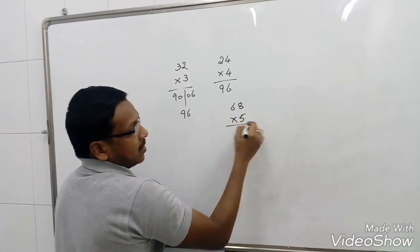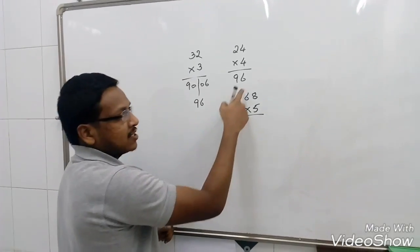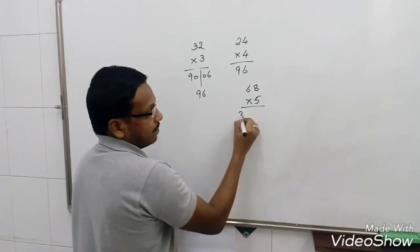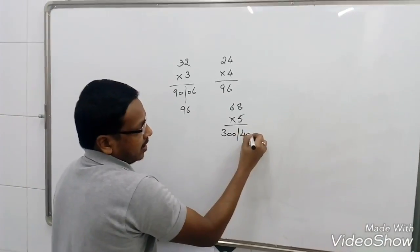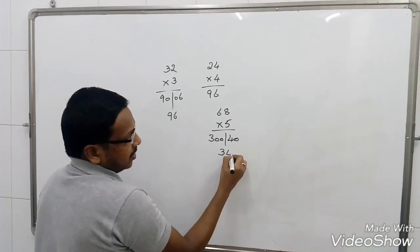68 into 5. 5 times 6 is 30. As it is in 10th place, I will assume as 300. And 5 times 8 is 40. So, 300 plus 40 is 340.